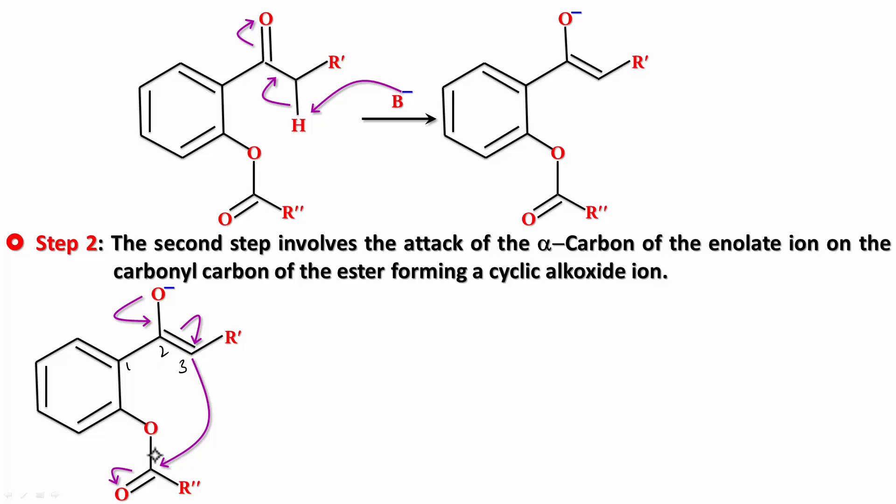Looking at the ring size—one, two, three, four, five, six—it's a stable ring, which is why this attack happens. You get a six-membered cyclic alkoxide ion.